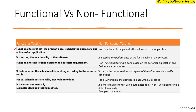The first difference: functional testing checks what the product does — it checks the operations and actions on the application. For example, consider a Gmail application with a login functionality — username, password, and a login button. If you enter the details and click login, it should log you in and open a home page or another page as per the customer requirement.